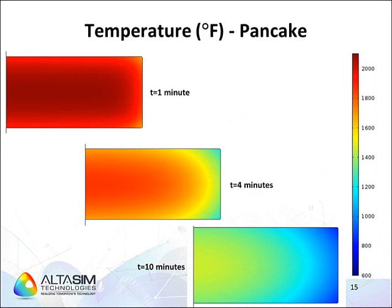The spatial variation of temperature shown here is at three different times. Initially, the temperature is relatively uniform with a slight decrease in temperature near the corner of the pancake. At these points, the airflow convects the maximum amount of heat away. You can see that as the quench progresses, these corners cool more rapidly than the rest of the pancake. These analytical results provide us with a clear understanding of the temperature distribution throughout the entire volume of the pancake.